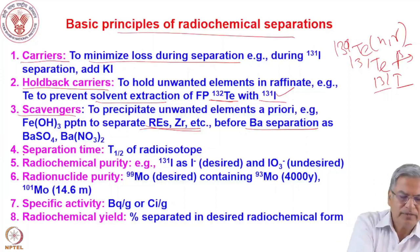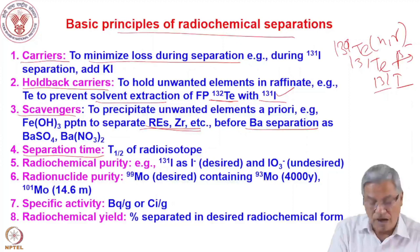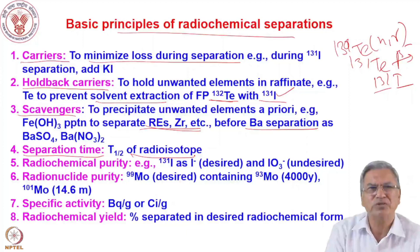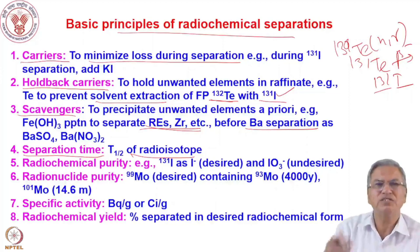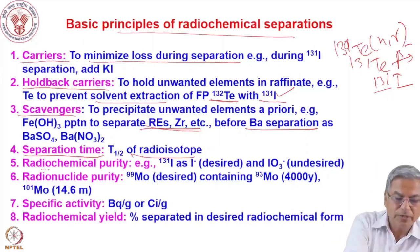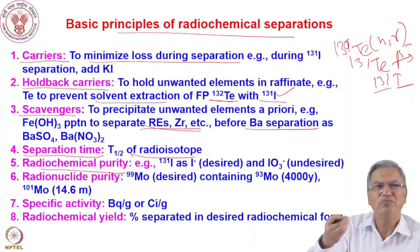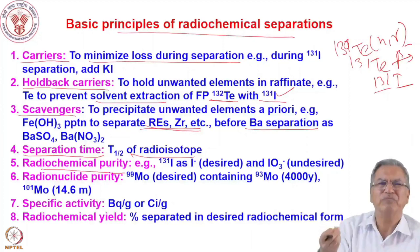These scavenging steps are mostly required for precipitation, solvent extraction, or even ion exchange separation. One important parameter for radiochemical separation is half-life. Half-life is very important because if the half-life is short and your separation time is long, you may lose the whole radioactive isotope by decay before you complete the separation.